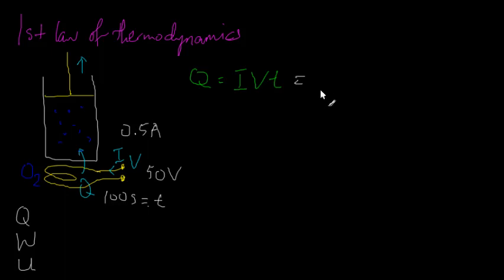So, since we are here, I'm just going to complete this calculation. 0.5 for the current, 50 for the volts, and 100 for the time in seconds. So, that would be 2500, and heat is energy, so it has units of joules. So, it can be done. It can be set up.